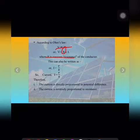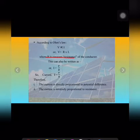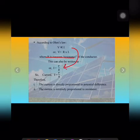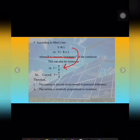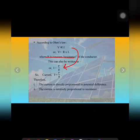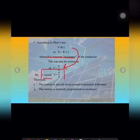This equation can also be written as: current equals V by R, where V is the potential difference, I is the current, and R is the resistance, which is constant. This is the mathematical expression for Ohm's law.